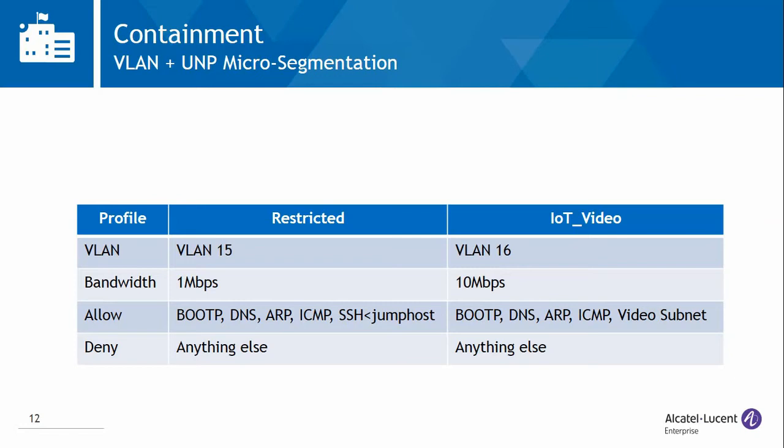These containers apply access policies and bandwidth caps. In the restricted profile, DHCP, DNS, ARP, ICMP and SSH from a provisioning jump host are allowed, but anything else is blocked, so that the device can obtain an IP address and we can configure it from the jump host using SSH. Bandwidth is limited to 1 Mbps. Similarly, the IoT video profile allows communication with the video subnet as well as other basic protocols, but anything else is blocked. A bandwidth cap of 10 Mbps is applied.